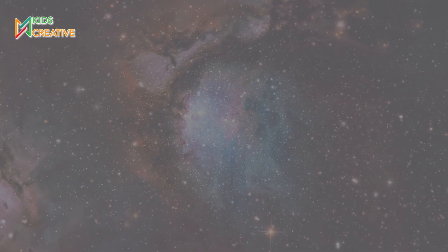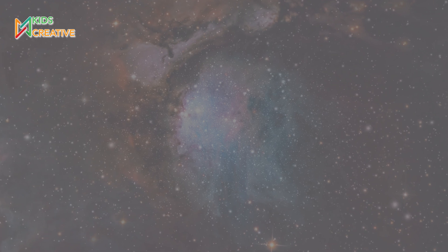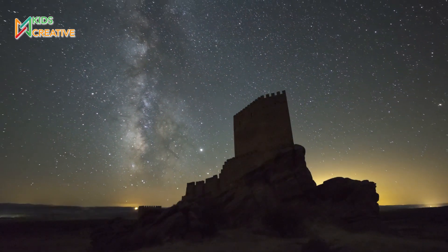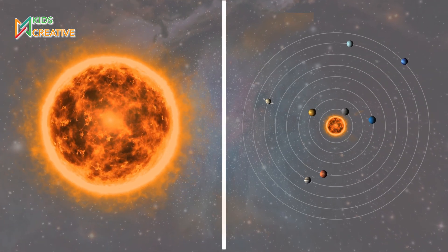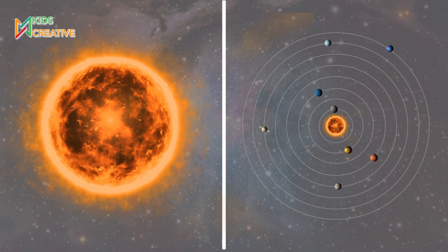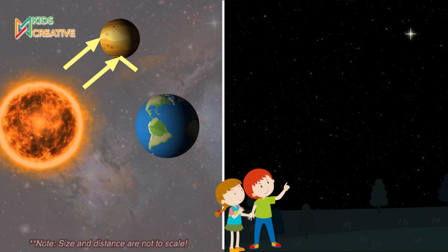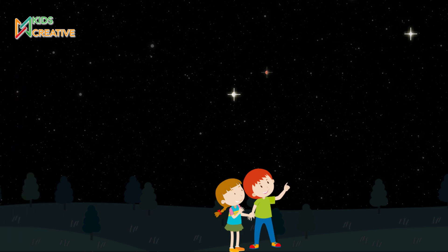Planets and stars might look similar from far away, but they're really different. Stars produce their own light and heat, like the sun. Planets don't make their own light. They only shine because they reflect light from a star. That's why we can see planets like Venus in the night sky. Can you name a planet you've seen in the night sky?